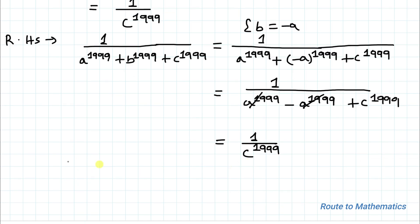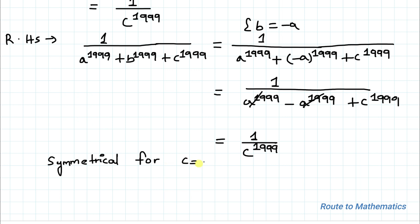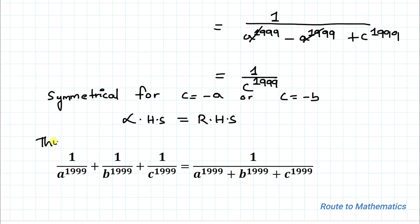This solution is symmetrical for c = -a or c = -b as well. Hence we can write LHS = RHS. Thus we have proved that 1/a^1999 + 1/b^1999 + 1/c^1999 = 1/(a^1999 + b^1999 + c^1999). Proved.